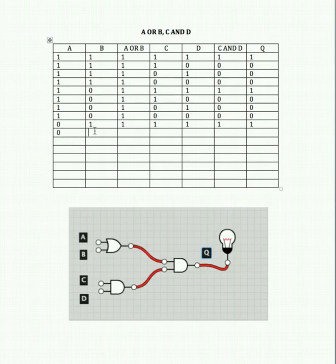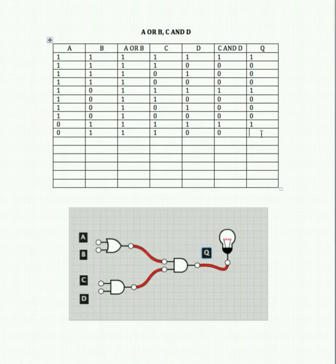Turn A off and B on, C on, but D off. For the OR gate: 0 and 1 is 1. For the AND gate: C and D are uneven, so that's 0. That gives us 1 and 0 into our final AND gate, which gives us 0.